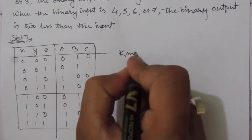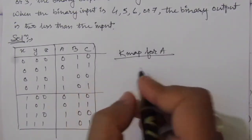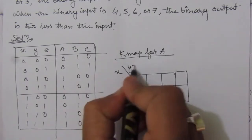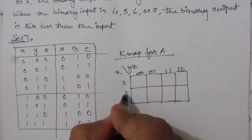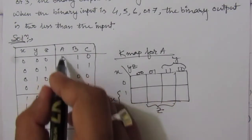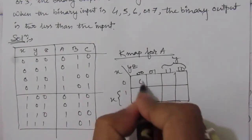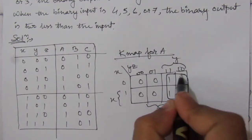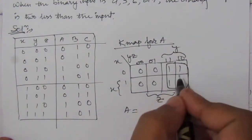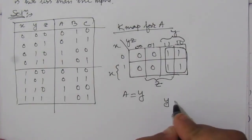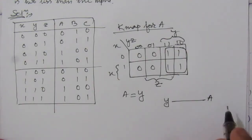For the K-map for A: we place the A values from the truth table — 0, 0, 1, 1, 0, 0, 1, 1 — into the K-map with variables X, Y, Z. From the K-map we can see that this is simply the Y variable. So A equals Y. The logic circuit for A is just a direct connection from input Y to output A — no gates needed.